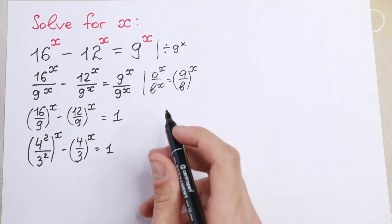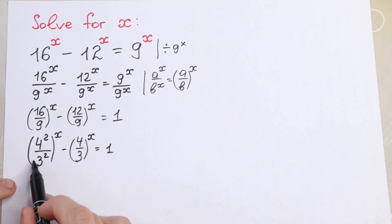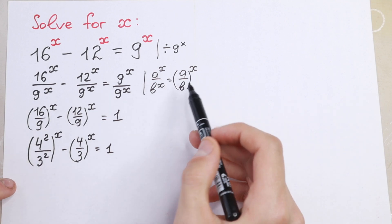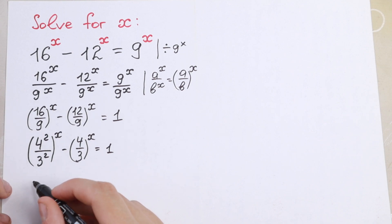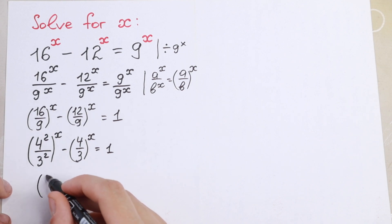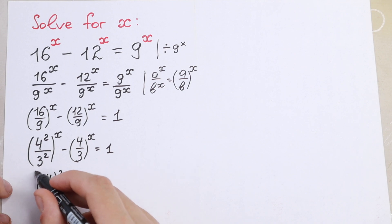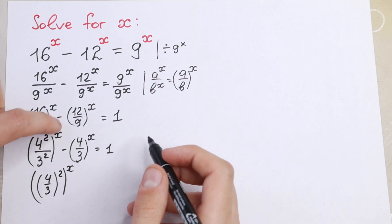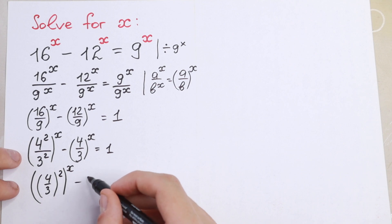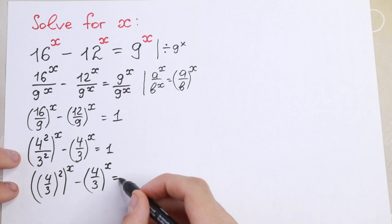So what do we do next? Take a look. We have the same case — different bases but the same exponent. So we can raise 4 over 3, all to the second power. We will have 4 thirds raised to the second power, and all raised to the power x, because x is the main exponent. Minus 4 over 3 to the power x, equal to 1.